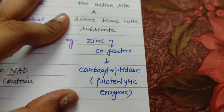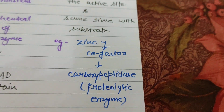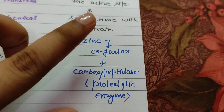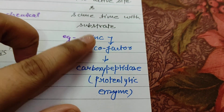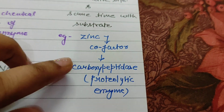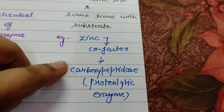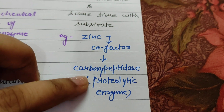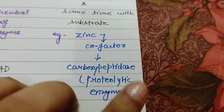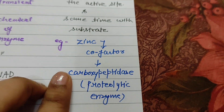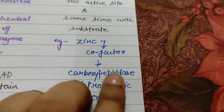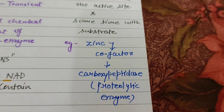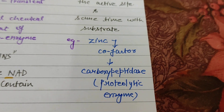An example of a metal ion co-factor is zinc, which is a co-factor for the enzyme carboxypeptidase. Carboxypeptidase is a proteolytic enzyme that helps to break proteins, and it is secreted by the pancreas.